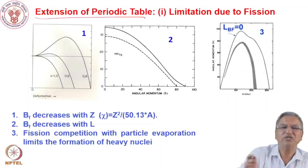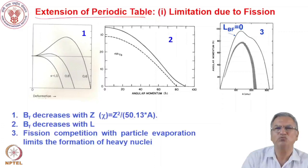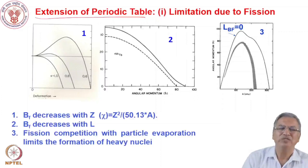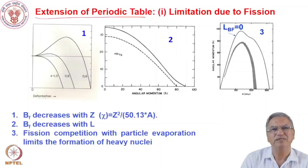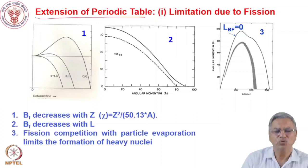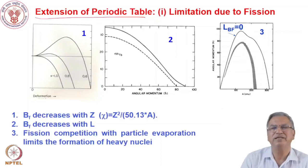So first let us discuss the extension of the periodic table. The elements up to 92 were available till the 1930s, and after the discovery of nuclear fission, attempts were made to synthesize heavier elements — neptunium, plutonium — by N-gamma reaction followed by beta-minus decay. With accelerators producing heavy ions and charged particles, heavy elements were also synthesized by fusion reaction, and by this time elements up to 118 have been discovered. The majority of them beyond element 100 have been synthesized by nuclear fusion of heavy projectiles with heavy targets, but there are some inherent limitations in extending the periodic table.